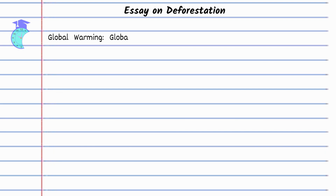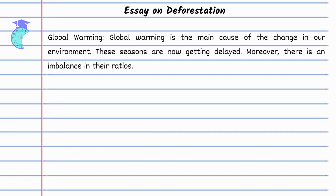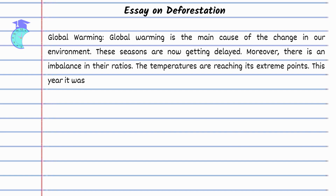Global warming is the main cause of the change in our environment. These seasons are now getting delayed, and moreover there is an imbalance in their ratios. The temperatures are reaching their extreme points — this year it was 50 degrees in the plains, which is the highest of all.